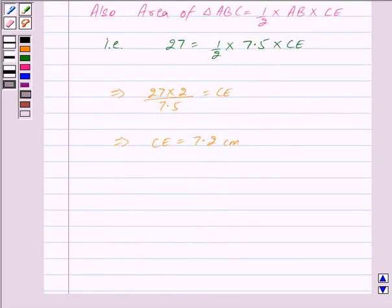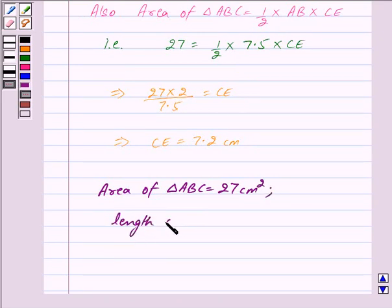Thus our answer is: area of triangle ABC = 27 cm² and length of CE = 7.2 cm.